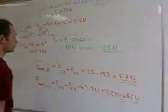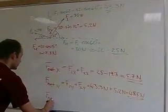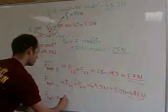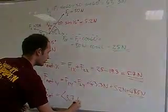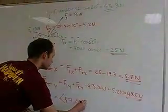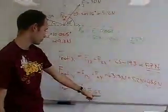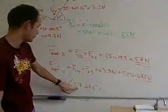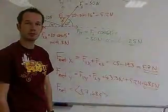So then we can say that the net force has the two components of 5.7 and 48.5 newtons. So there's the answer. So there's the components of the net force. 5.7 newtons and 48.5. So that's it.